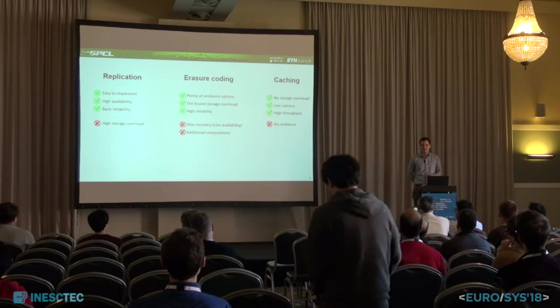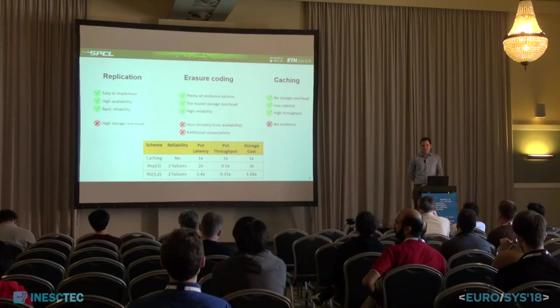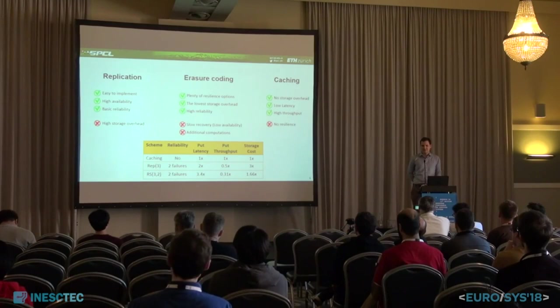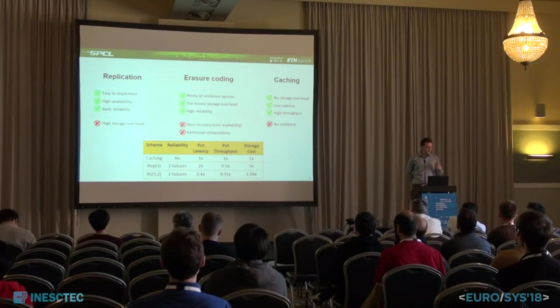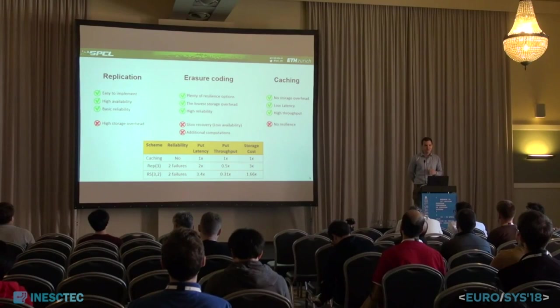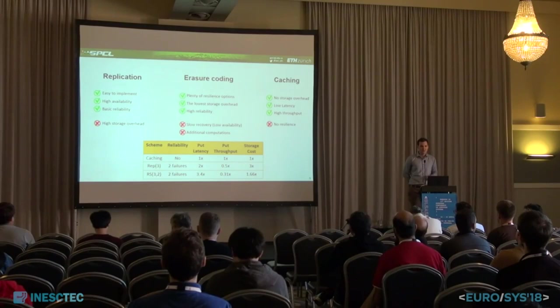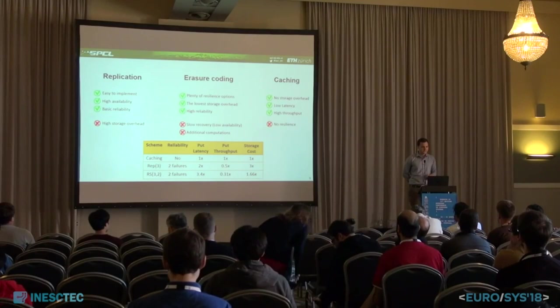Different storage schemes provide different trade-offs in reliability, availability, performance, and utilization of cluster resources such as memory usage, network load, and CPU load. Here you can see a comparison between caching with no redundancy, replication-3 with three data copies, and Reed-Solomon 3+2 with three data nodes and two parity nodes.